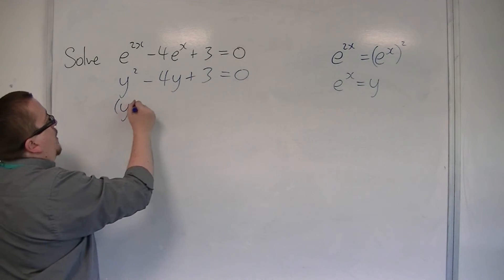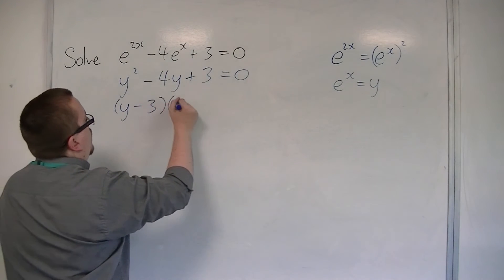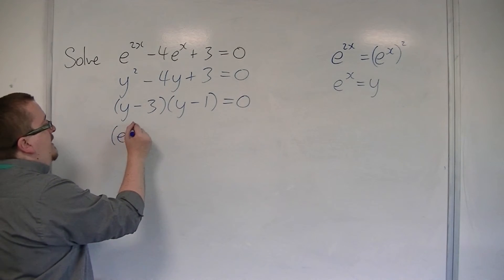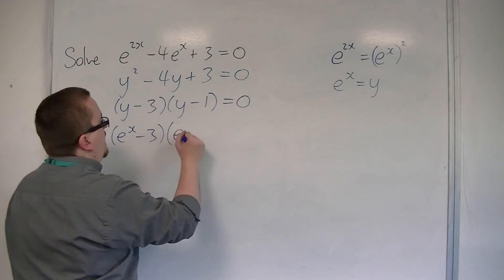That can be factorised: y minus 3, y minus 1. And then I can put the e to the x back in: e to the x minus 3, e to the x minus 1.